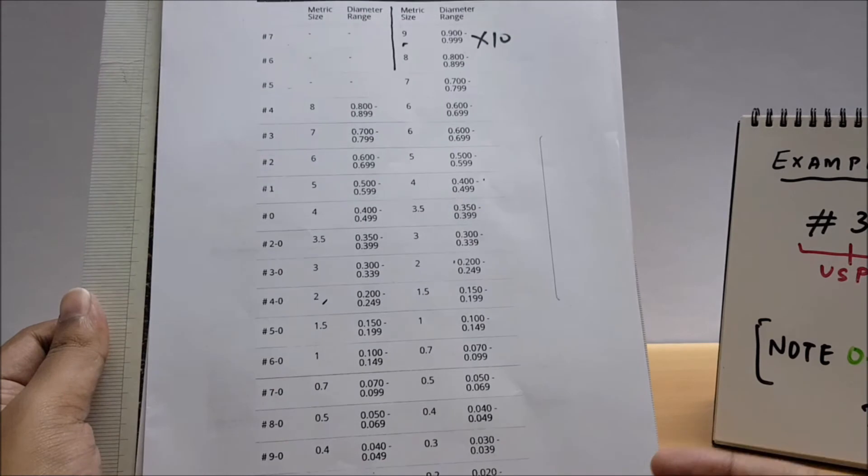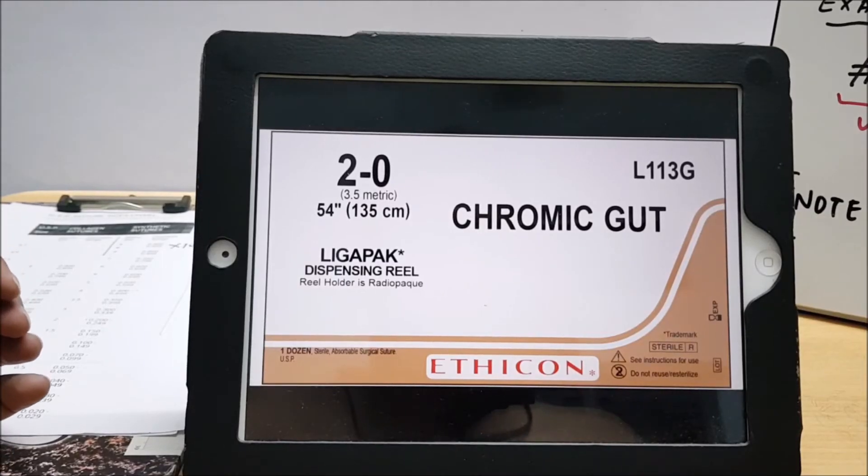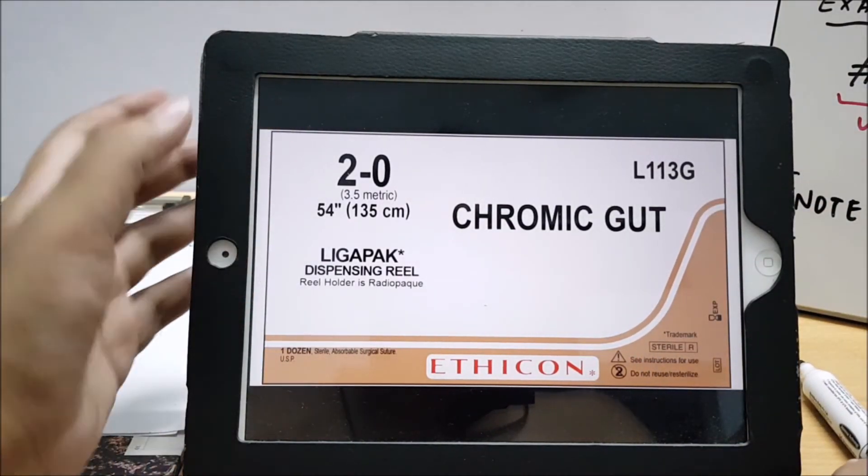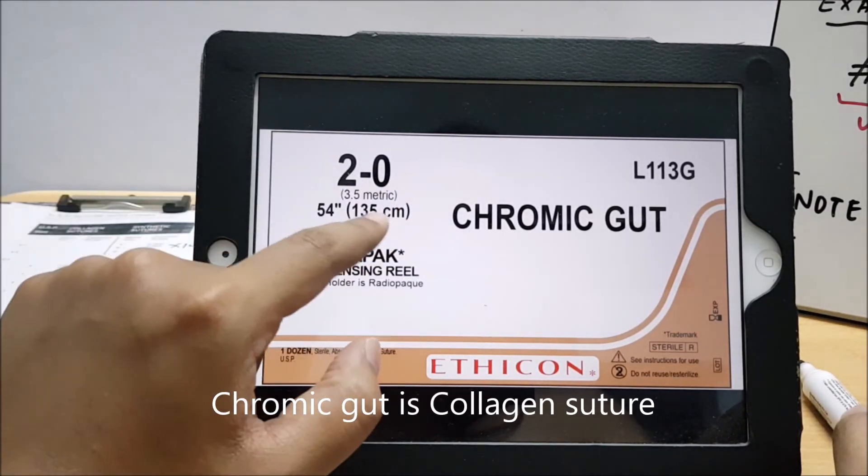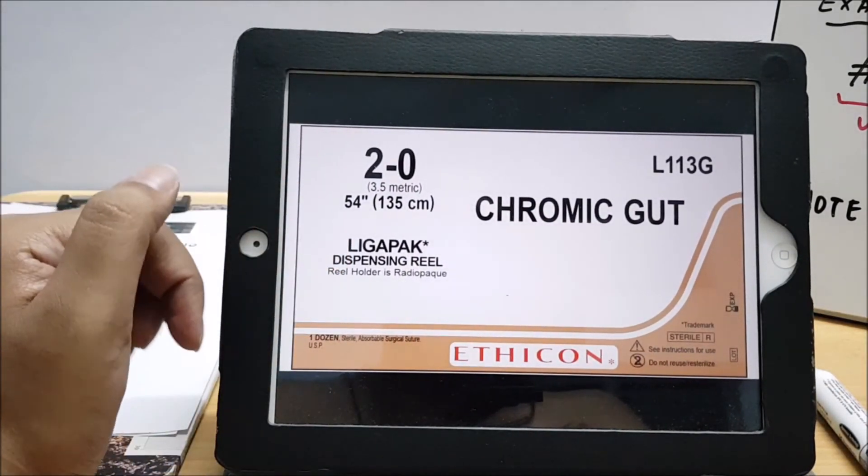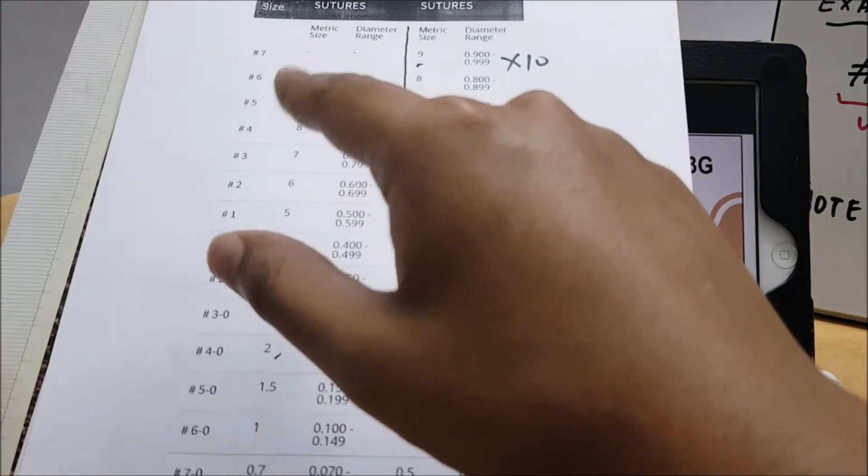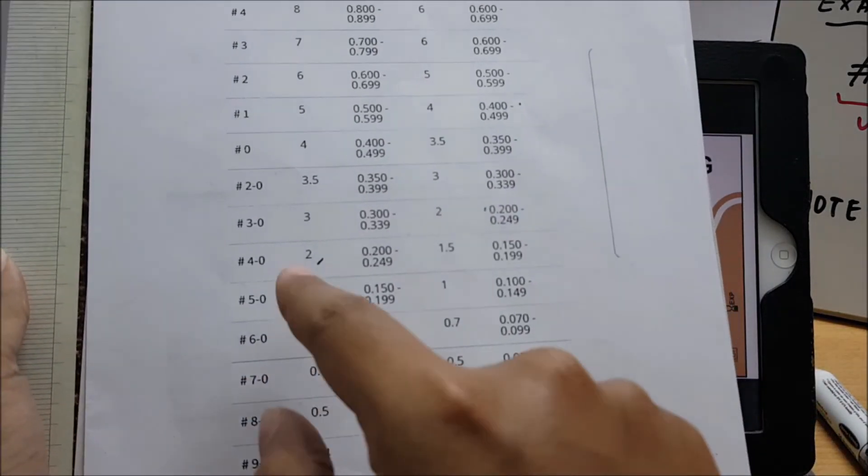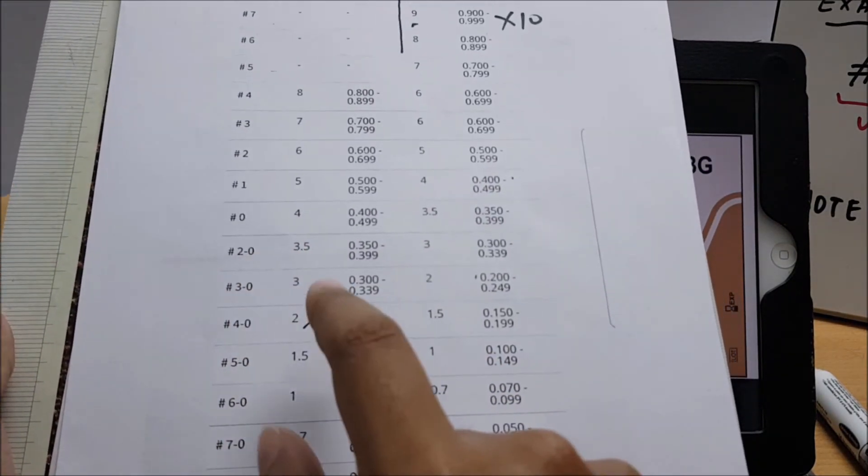So friends, here we have like 2-0 suture. As we already discussed, 2-0 means in metric it would be 3.5. Now chromic is a collagen suture. Now you may confuse - why 2-0, 3.5? Come back to this table, friends. This is collagen. So we are seeing at 2-0. Let us go to 2-0 - this is 2-0, and what is the metric size, friends? Yes, 3.5. So it is a collagen suture. This is also a way of identifying.